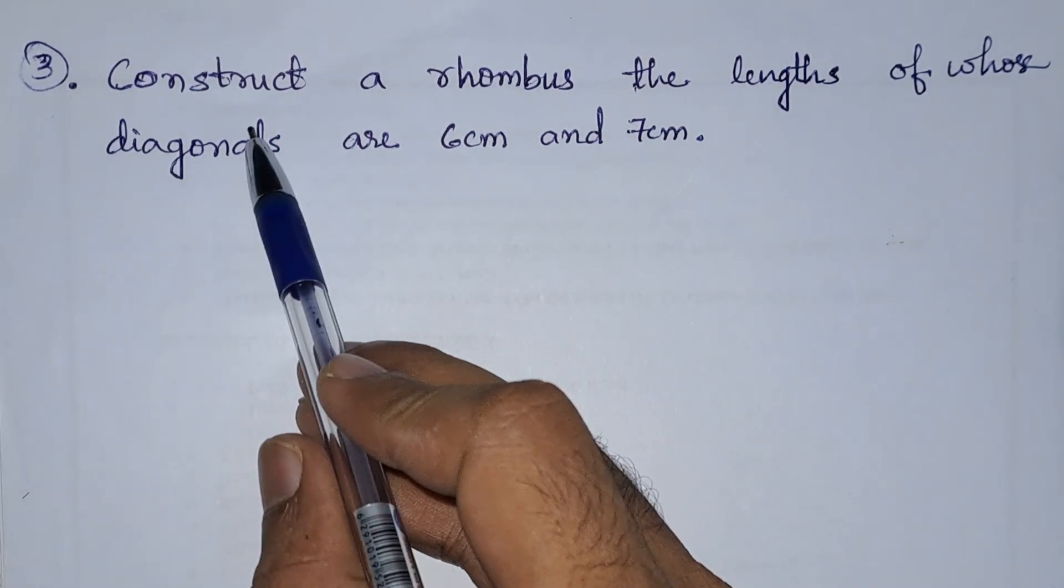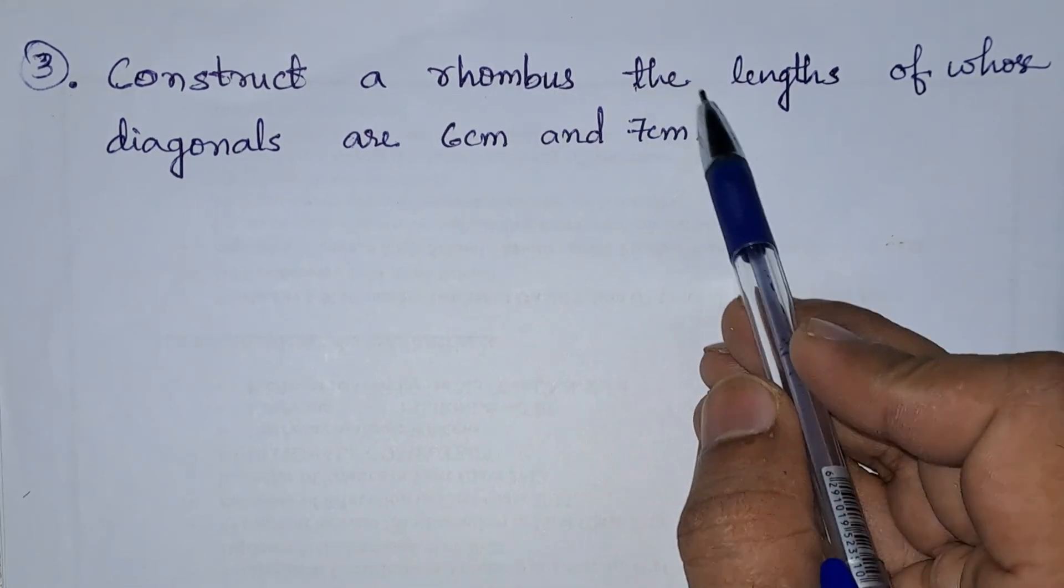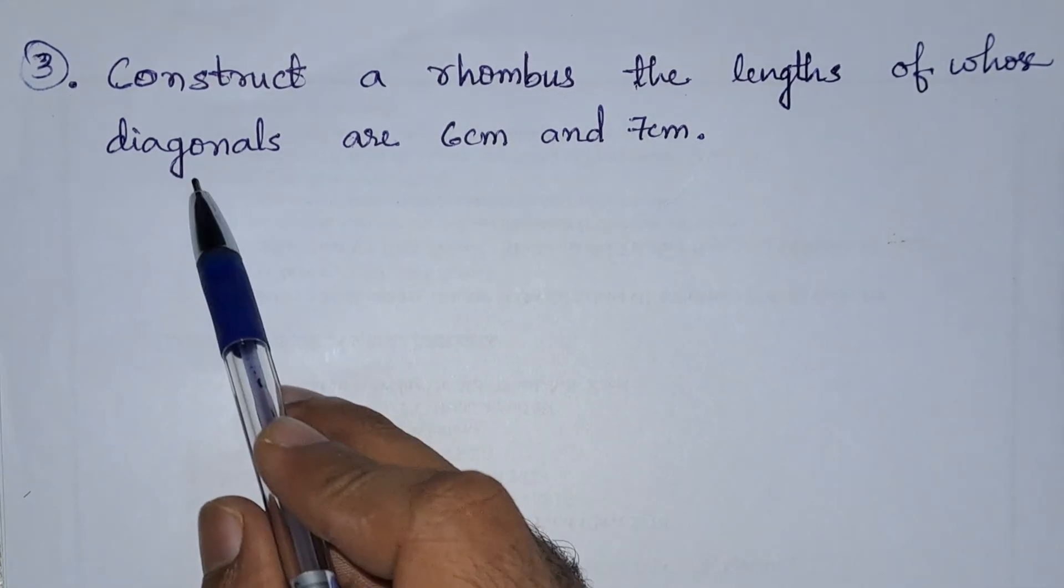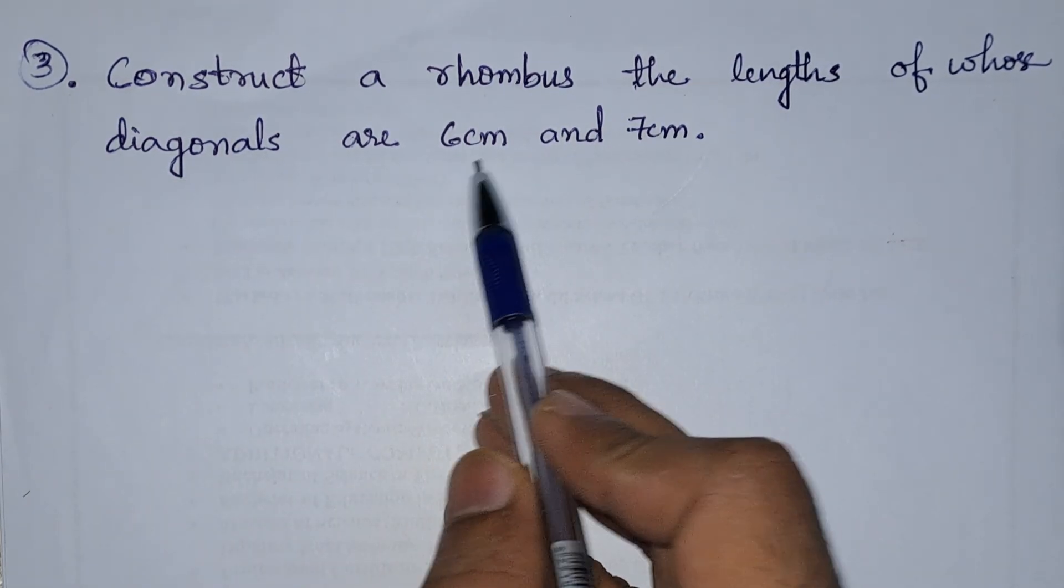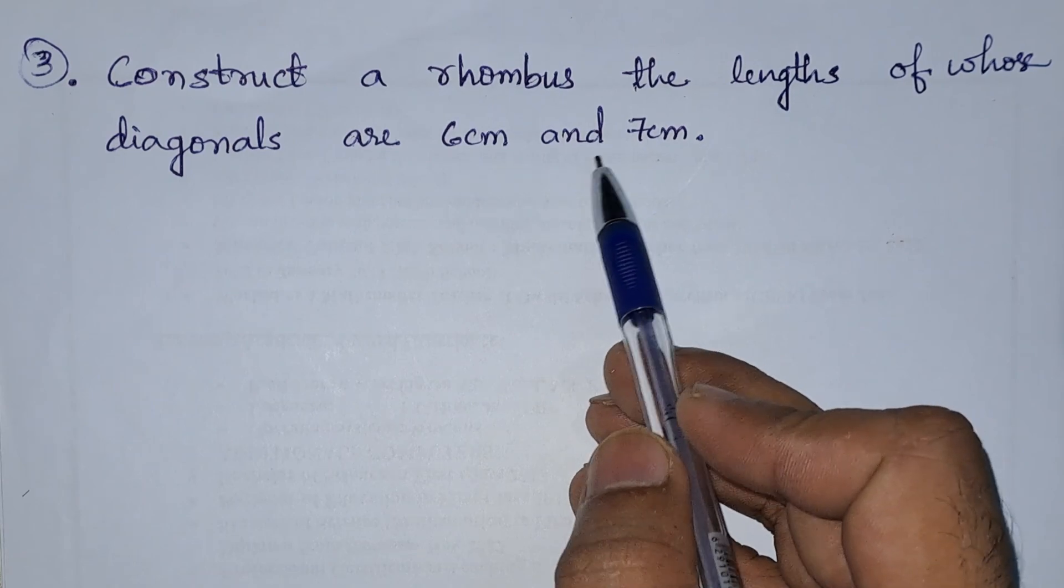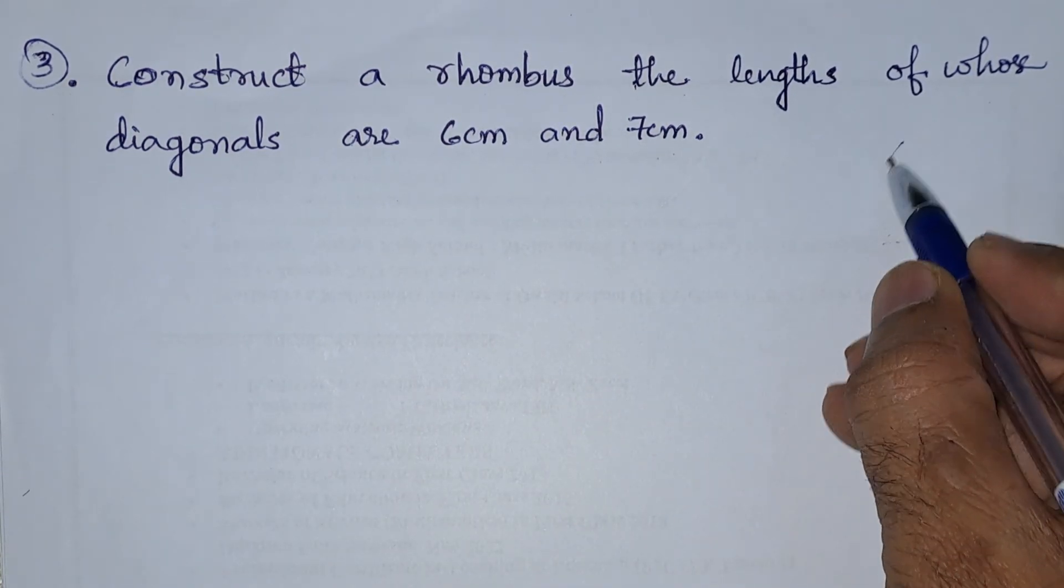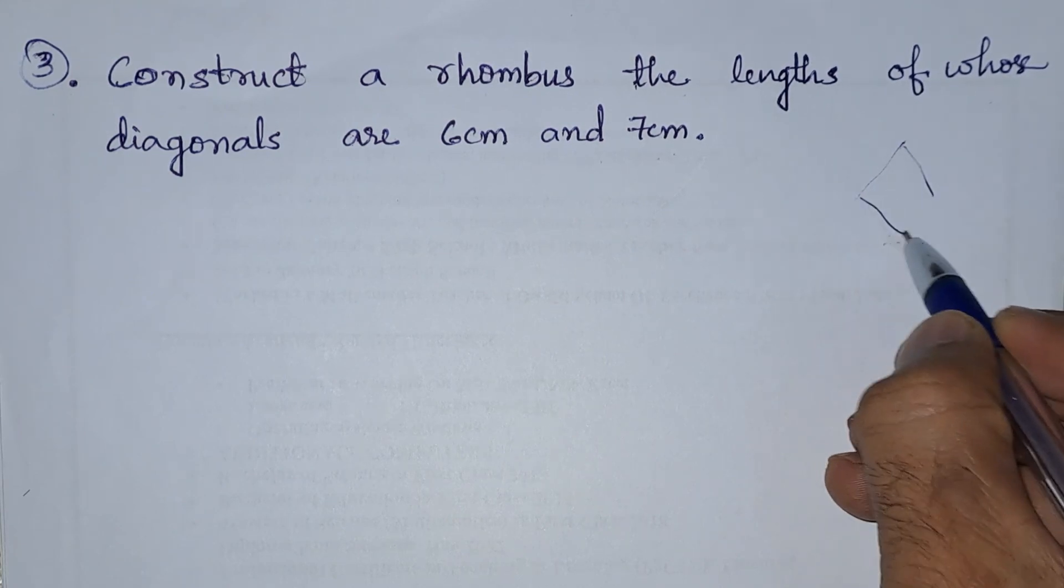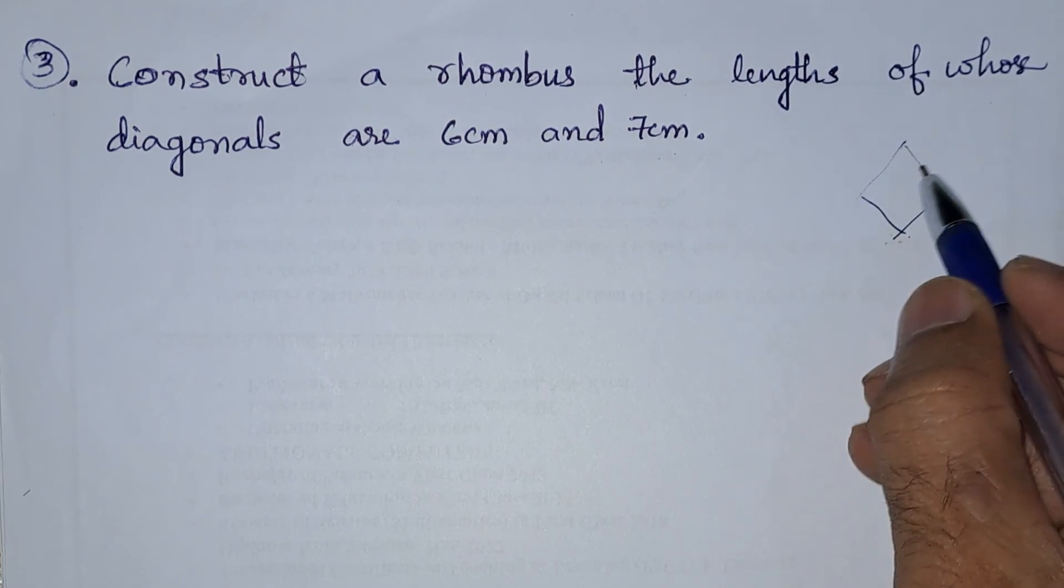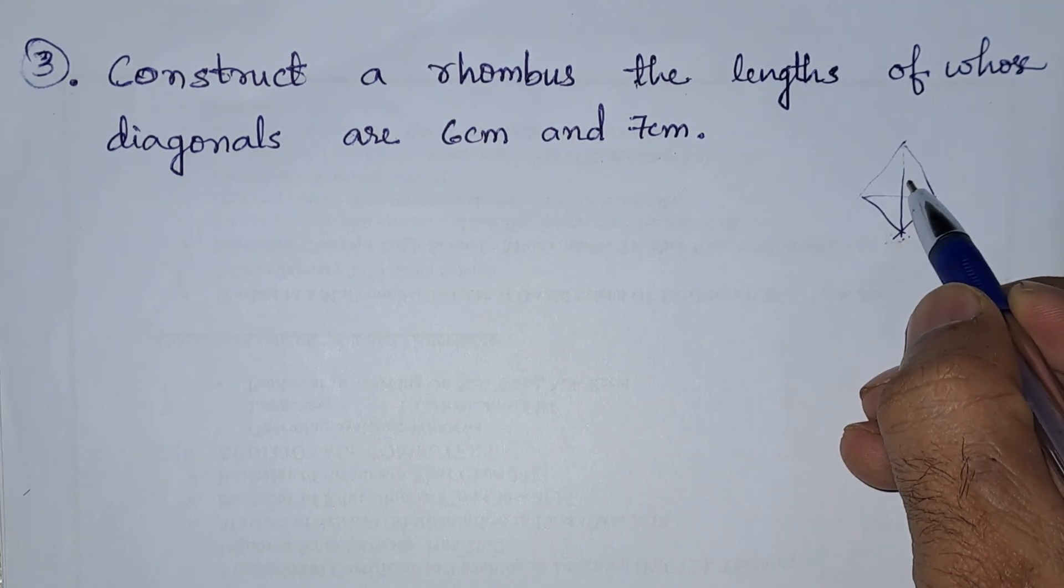Third problem: construct a rhombus. We need to construct a rhombus, the lengths of whose diagonals are 6 centimeters and 7 centimeters. So they have given the lengths of the diagonals. Let us draw a rough diagram of the rhombus. The rhombus will look like this, and these are its diagonals.